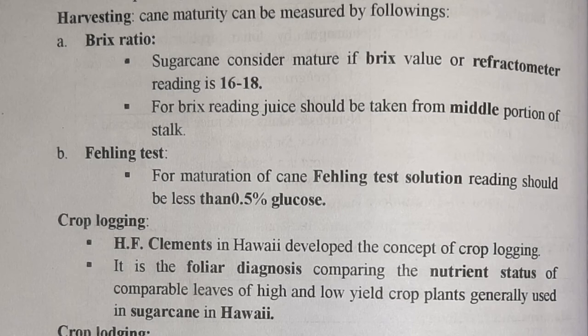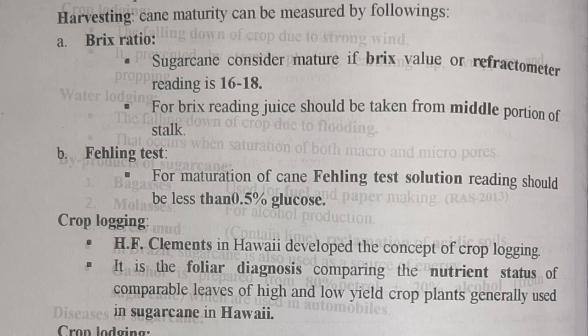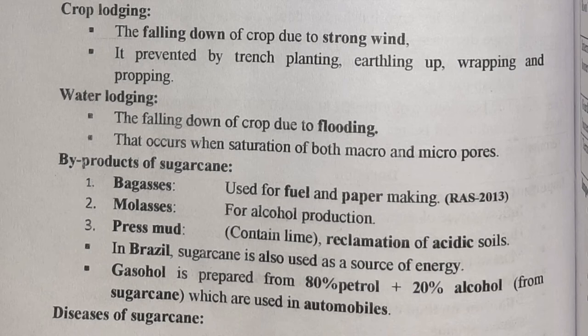Two important terms: crop logging and crop lodging. Crop logging was developed by H.F. Clements in Hawaii — it is the foliar diagnosis comparison of the nutrient status of comparable leaves of high and low yield crop plants, generally used in sugarcane in Hawaii. Lodging is the falling down of the crop due to strong wind, prevented by trench planting, earthing up, wrapping, and propping. Water logging is the falling down of crop due to flooding, occurring when saturation of both macro and micro pores happens.